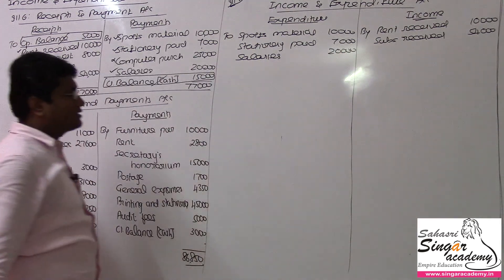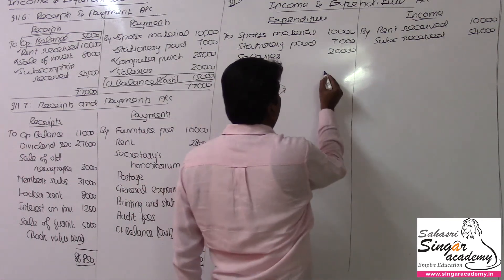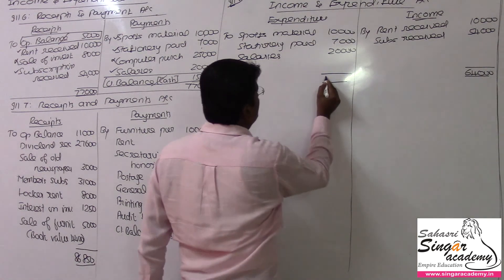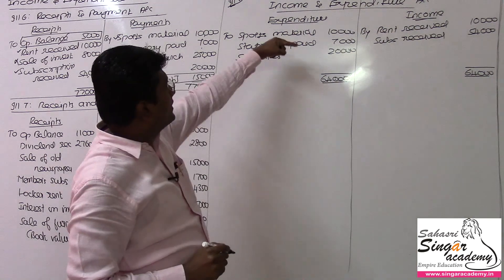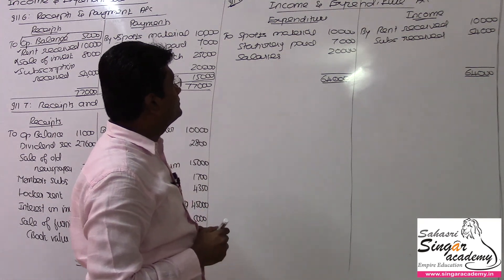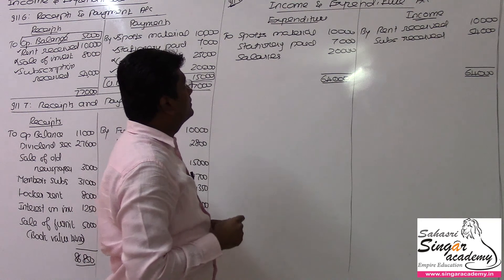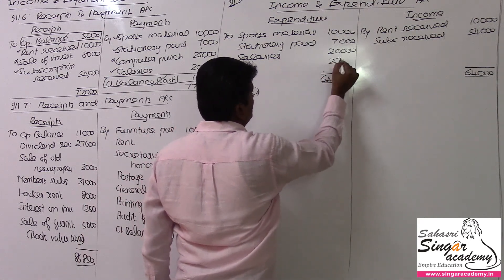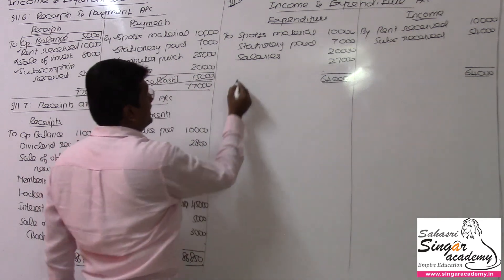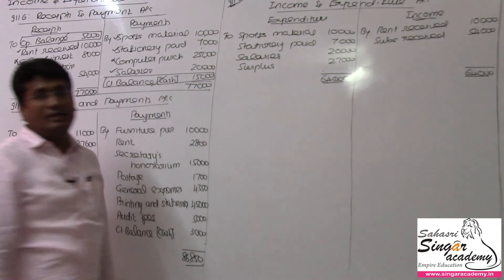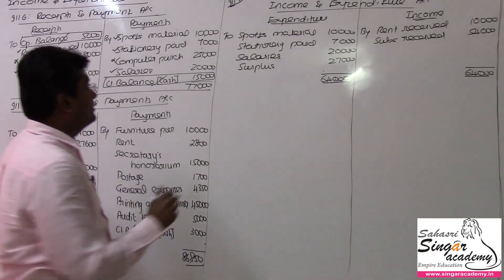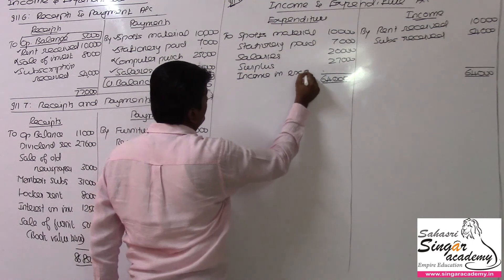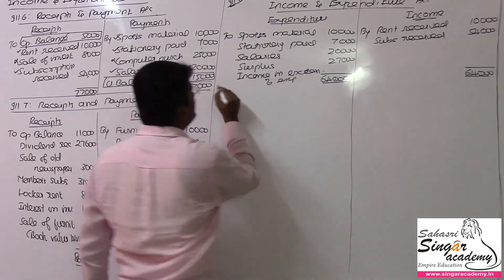Balances and capital receipts and payments will not come. Total income side: 64,000. Expenditure side: 30,000 plus 7,000 equals 37,000. The balance of 27,000 will be surplus - income in excess of expenditure, named as surplus. Illustration number 6 is complete.